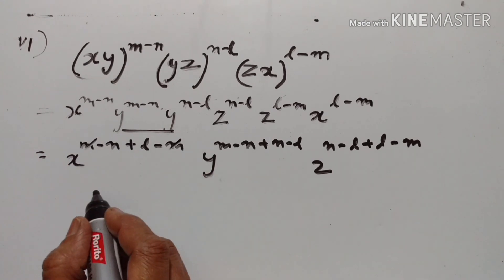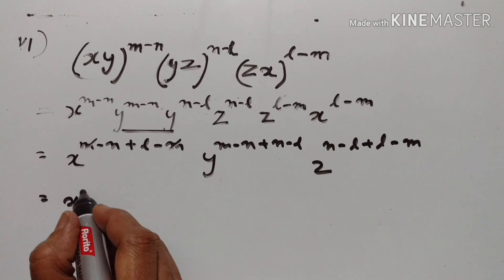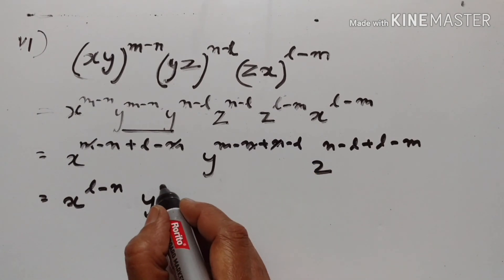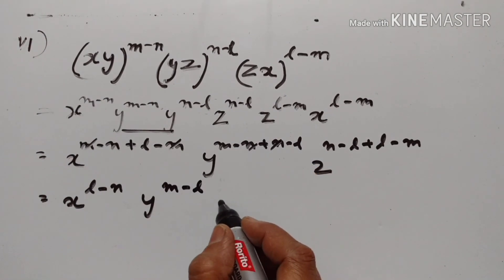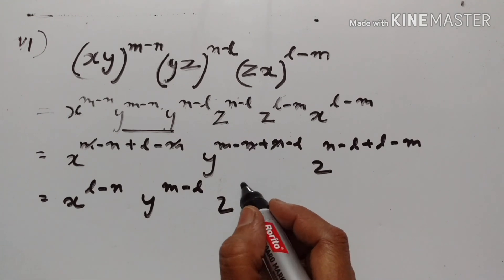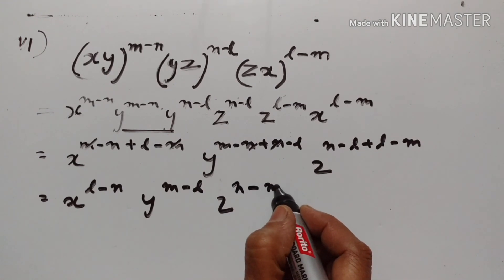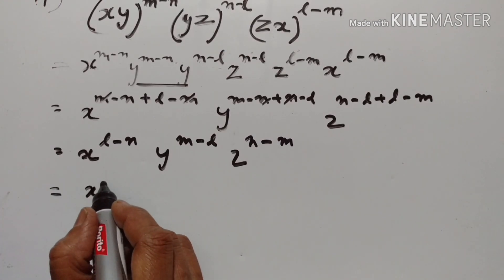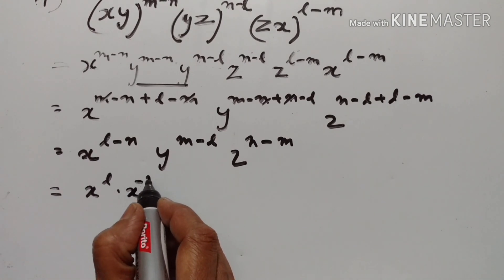m and minus m cancel off. X raised to the power of minus n plus l, so minus n plus l. Y raised to the power of n; n goes off so m minus l. Z raised to the power of: l goes off, n minus m. So this is x raised to the power of l into x raised to the power of minus n.